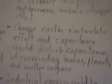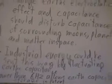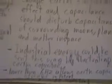Tesla also said that changing Earth's electrostatic effect and capacitance should disturb surrounding moons, planets, and matter in space — meaning industrial energy could potentially be sent this way by fluctuating Earth's capacitance in space. In his patent, he noted that below 6 hertz allows Earth capacitive storage. Going so slow with frequency changes the Earth's capacitance, charging it to a positive or negative potential. Because of that, the planets around it would likely respond with the opposite polarity, like a capacitor.